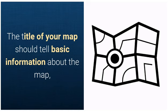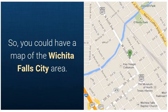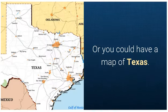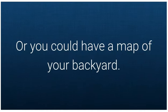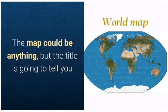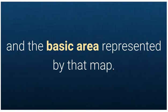First is your title. The title of your map should tell basic information about the map, such as the area represented. So you could have a map of the Wichita Falls City area, or you could have a map of Texas, or you could have a map of the United States, or you could have a map of your backyard. The map could be anything, but the title should tell you some basic information about the map and the basic area represented by that map.